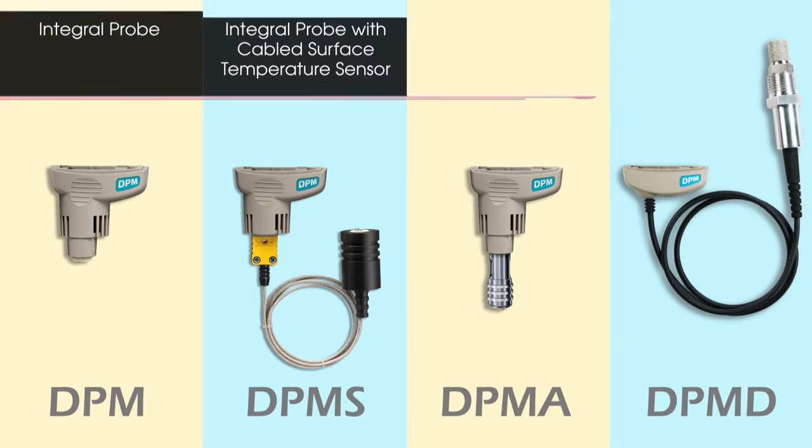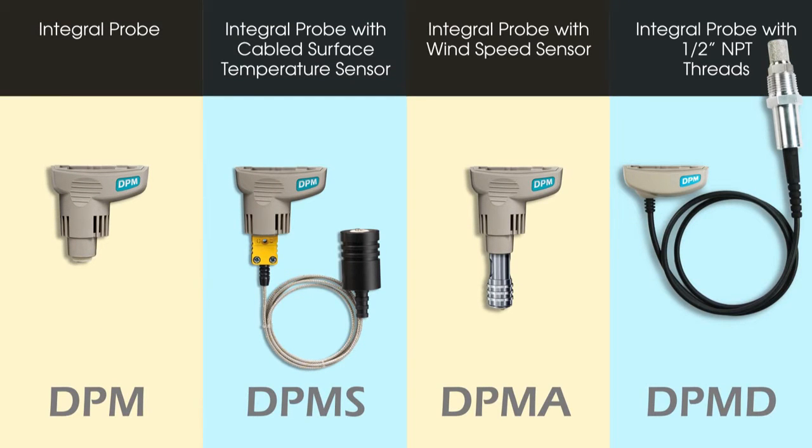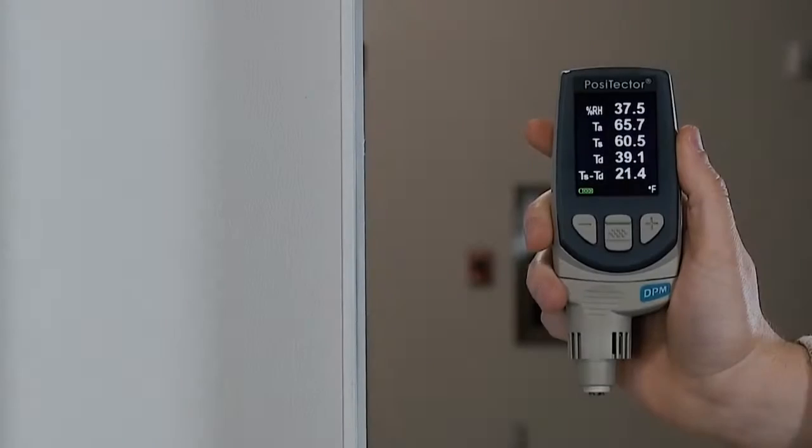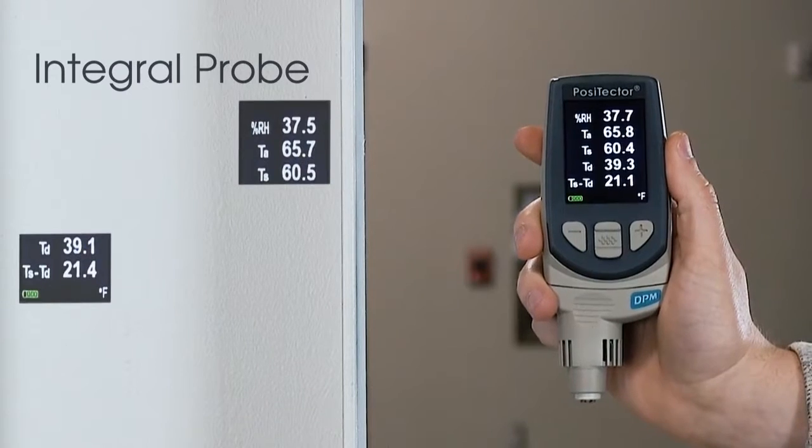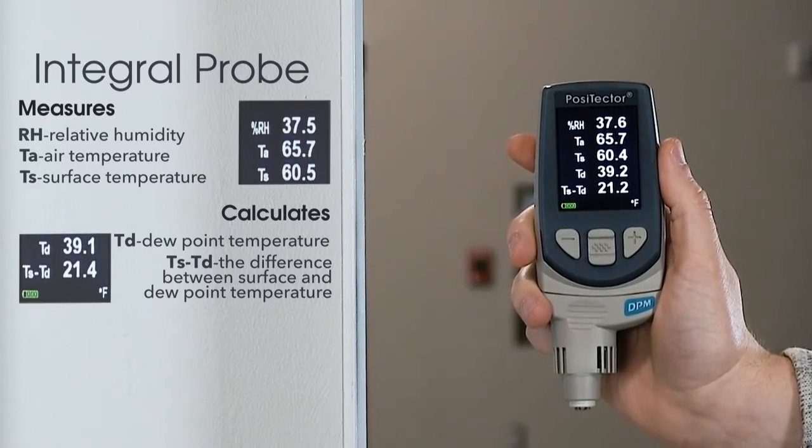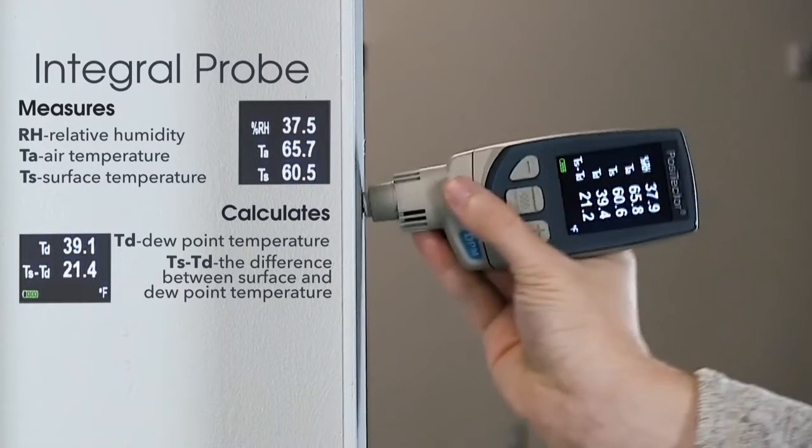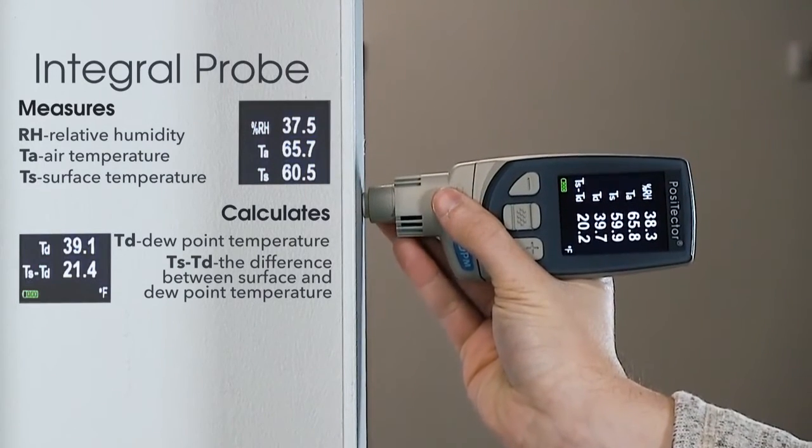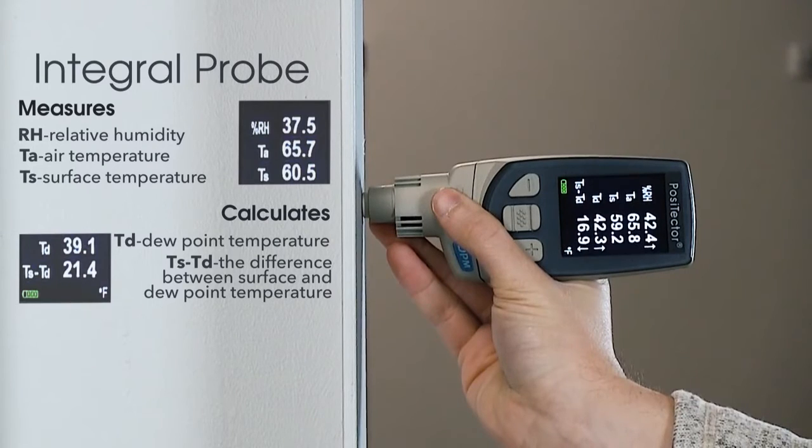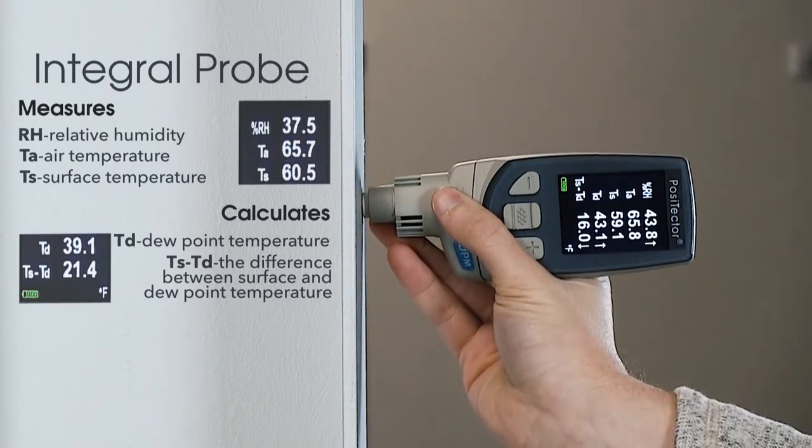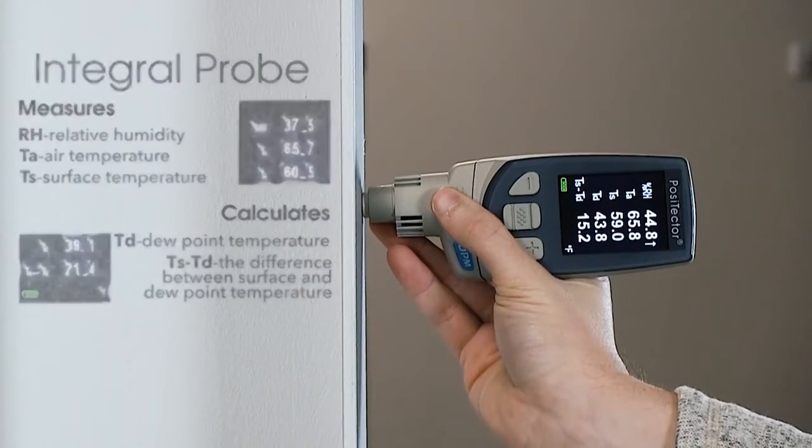There are four Positector DPM models suitable for measuring environmental conditions in a variety of applications. The Positector DPM integral probe contains ambient temperature and humidity sensors, in addition to an integrated surface temperature sensor. At a glance, view the relative humidity, ambient and surface temperatures, and the dew point temperature, ideal for measuring environmental parameters around the job site.